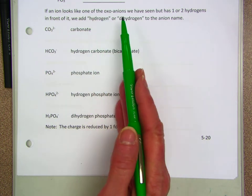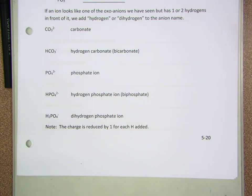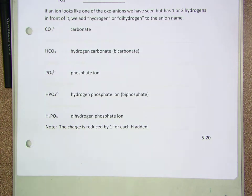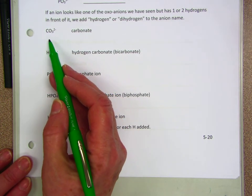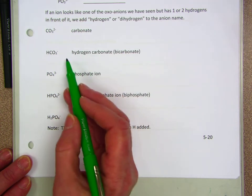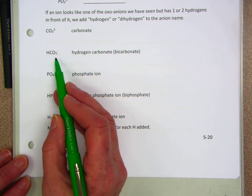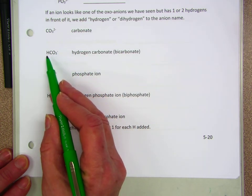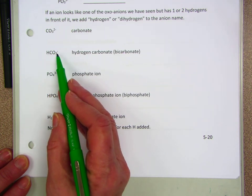If an ion looks like one of the oxoacid ions but it has one or two hydrogens in front of it, we add the word hydrogen or dihydrogen. We also sometimes use the prefix bi to replace hydrogen. So we have the carbonate ion, CO3(2-). If we add a hydrogen ion to it, we get HCO3-, where the hydrogen is added on the front and the charge goes down by one.